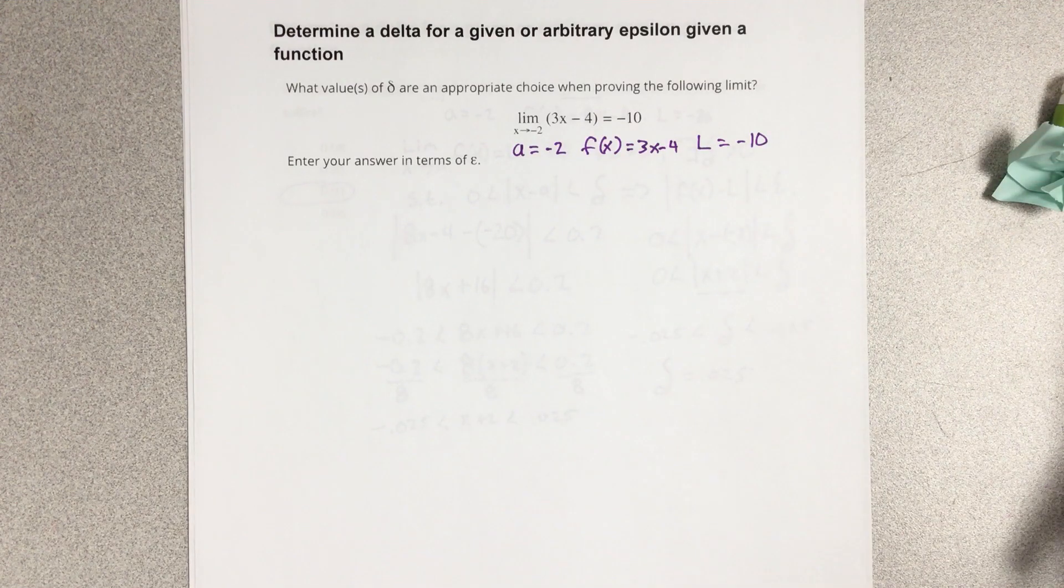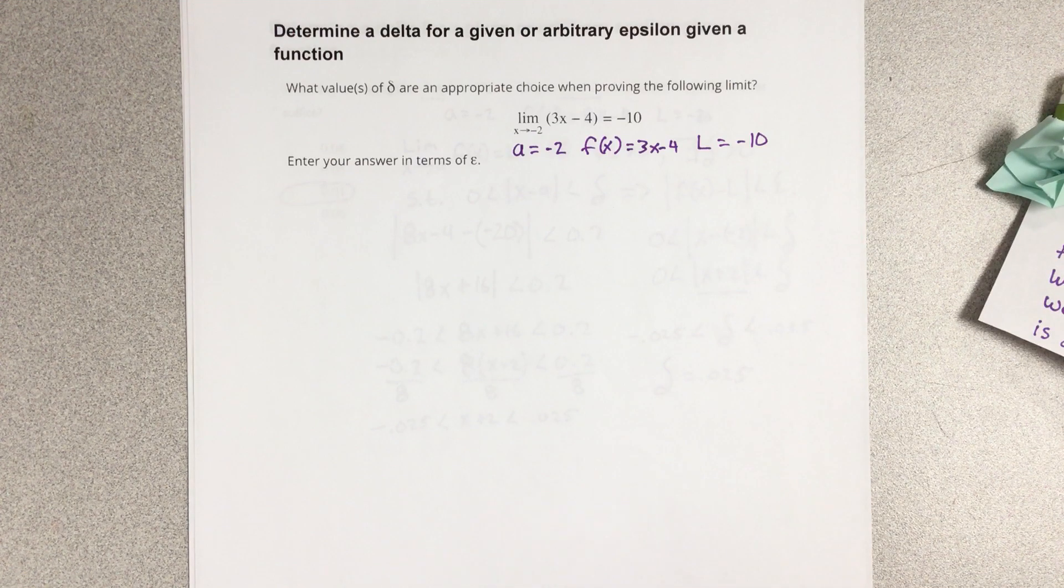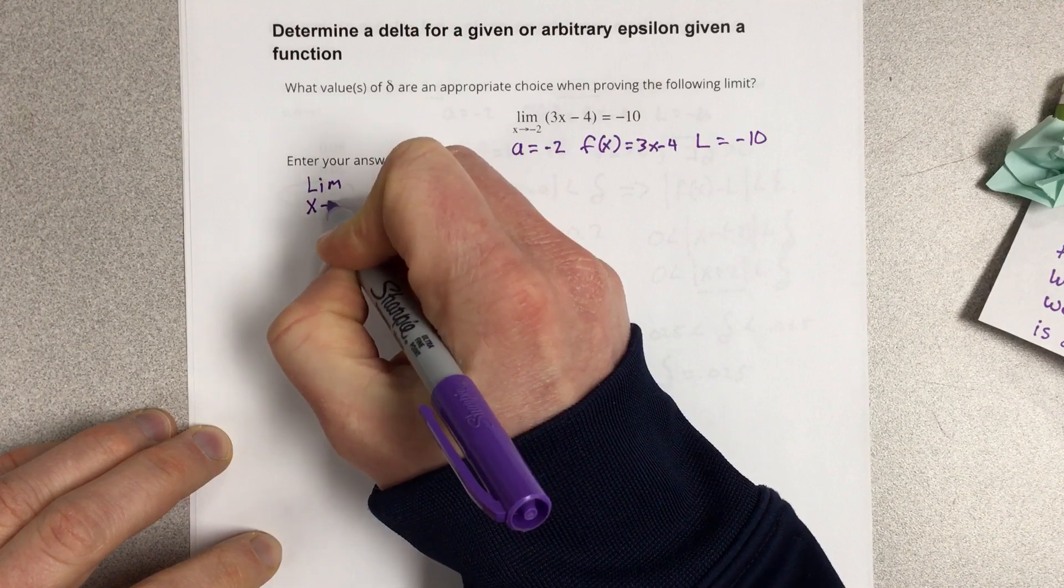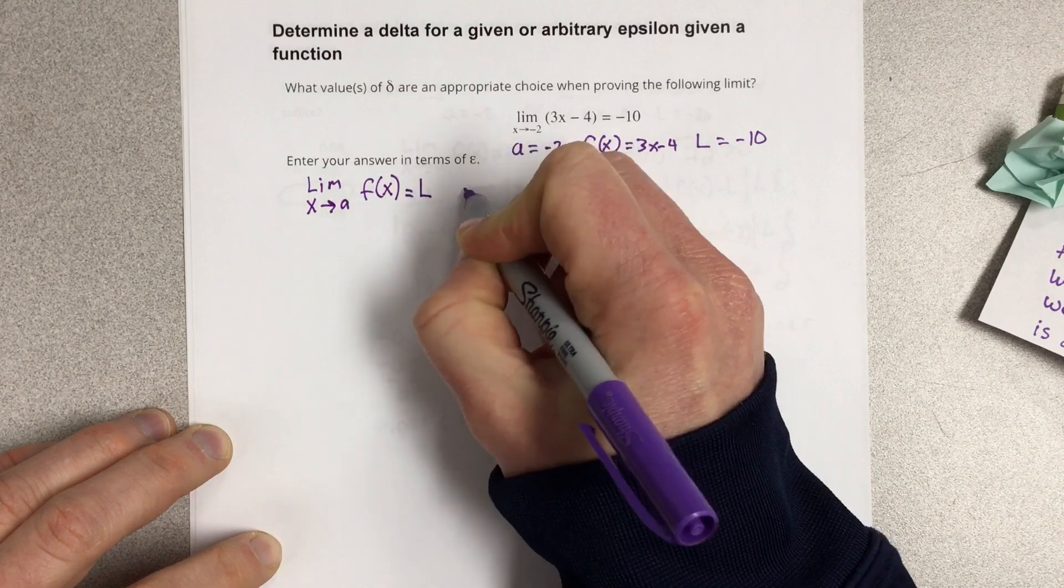Let's write down the epsilon delta definition here, and we can say that is the limit as x approaches a of f(x) equals L if